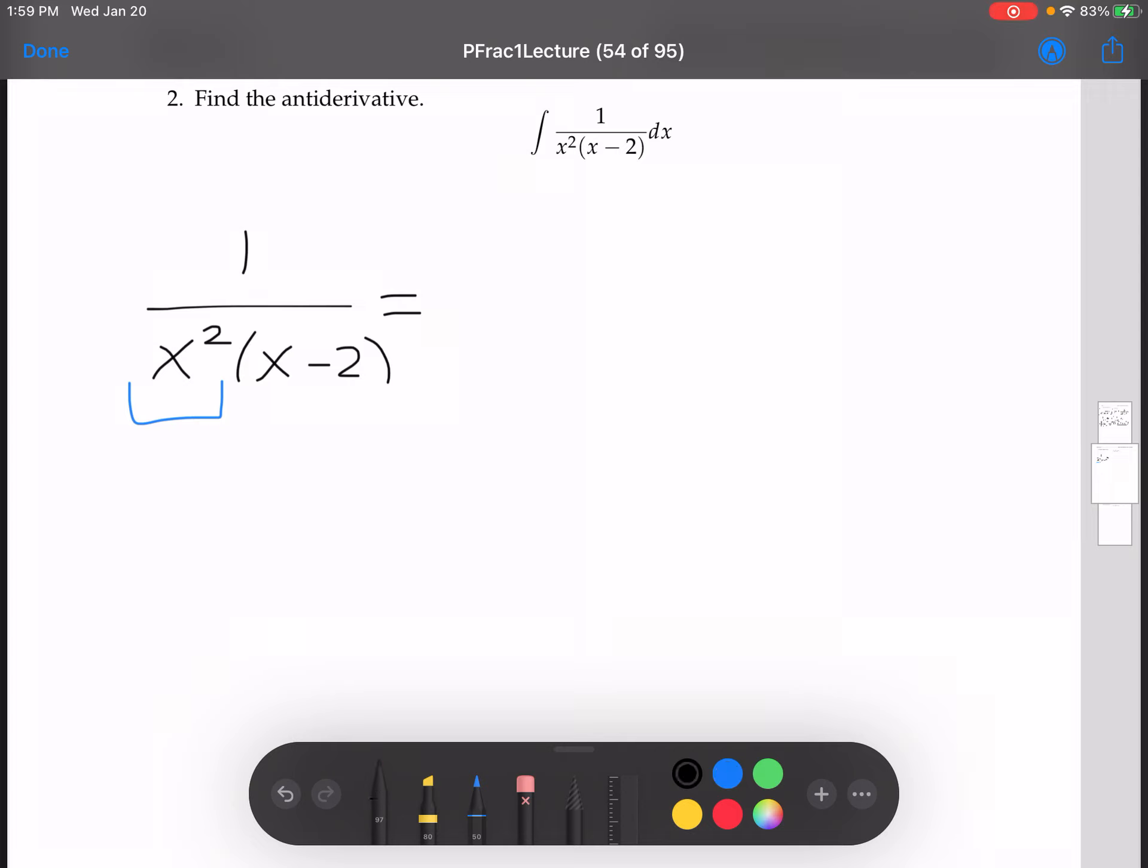Whenever we have that situation, we have the setup. We have A over x plus B over x squared, and then good old C over x minus 2.